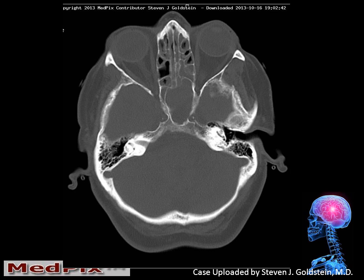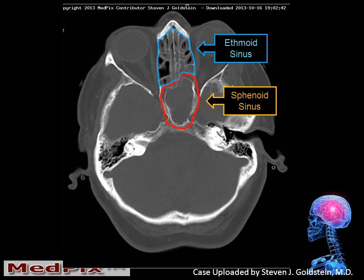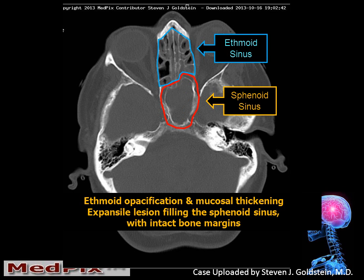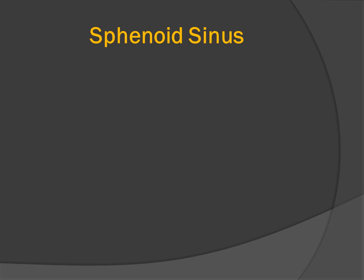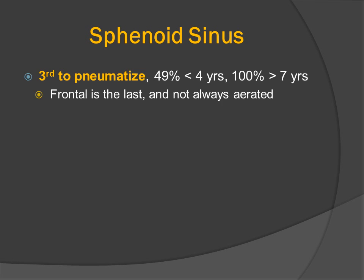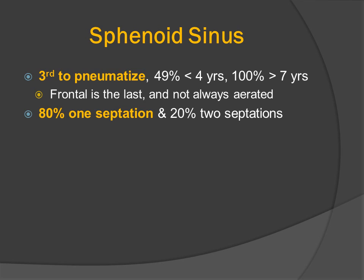The bone window image demonstrates the sphenoid sinus with mucosal thickening and homogeneous opacification of the sphenoid sinus with slightly convex margins. We have evidence of recurrent or chronic sinusitis as well as a fluid-filled sinus. The sphenoid sinus is the third to pneumatize. The frontal is usually the last and does not always become aerated.